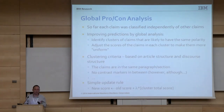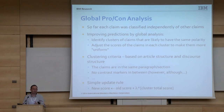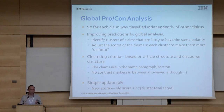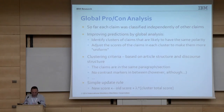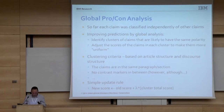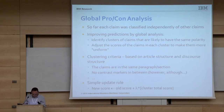So far I described how we predict the polarity of each claim independently. Now we try to improve these results based on global analysis. The idea is to find clusters of claims that are likely to have the same polarity, and then adjust the scores in each cluster to make the scores more uniform. The clustering criteria is based on article structure and discourse structure — for example, we look at claims in the same paragraph that don't have contrast markers like 'although' or 'however' between them. Once we have these clusters, we use a simple update rule where we add to the claim score a sum of all the scores in the cluster multiplied by some constant.